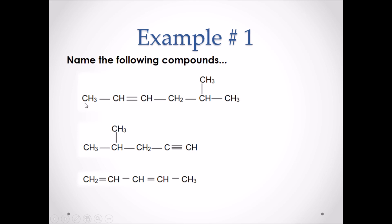In our first molecule, we have to find the longest carbon chain that includes the multiple bond — one, two, three, four, five, six. We then want to number the chain from the end that gives the multiple bond the lowest value. Therefore, the multiple bond will be coming off the second carbon. That leaves us with one branch, which is a methyl branch, coming off the fifth carbon. As a result, our name is 5-methyl hex-2-ene, meaning we have a six-carbon chain with a double bond at the second carbon and one methyl branch coming off the fifth carbon in the chain.